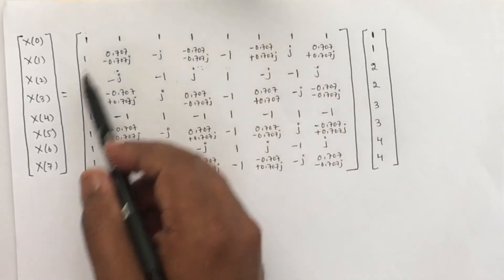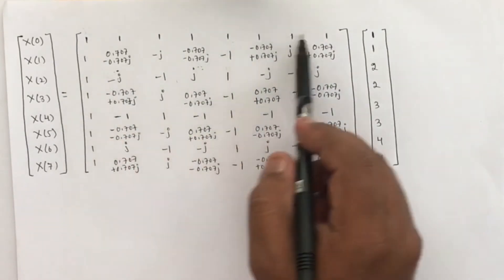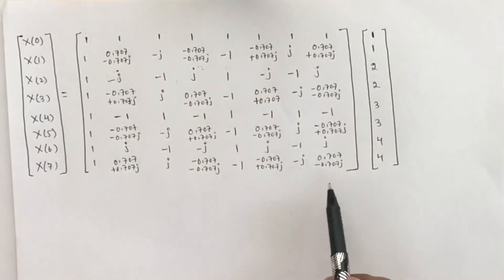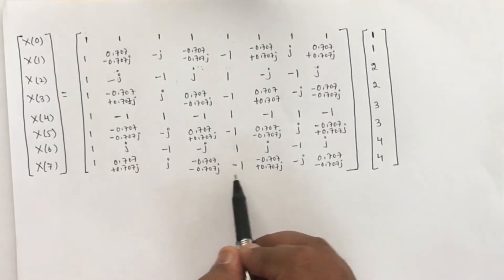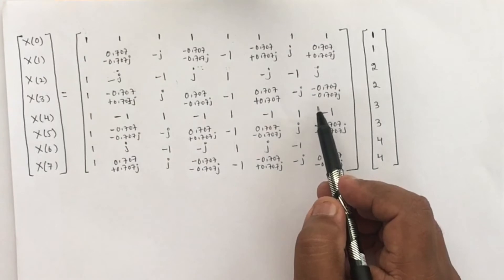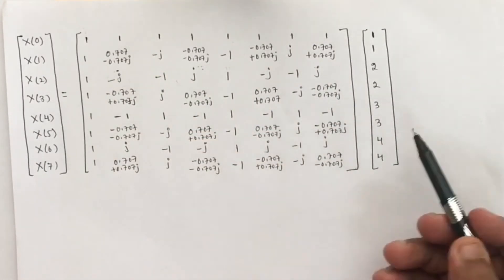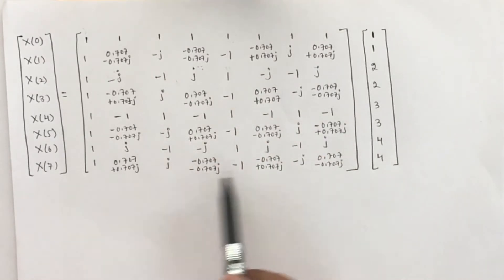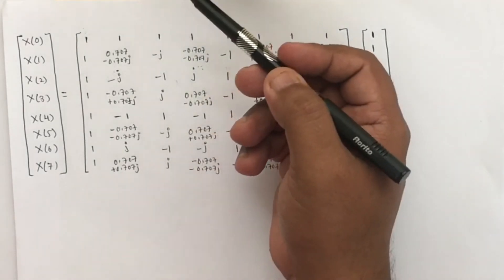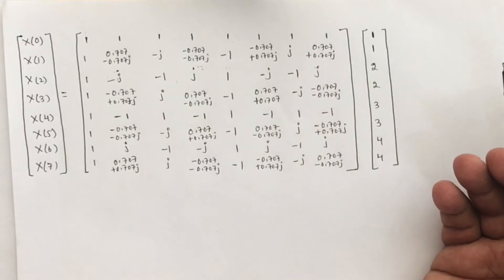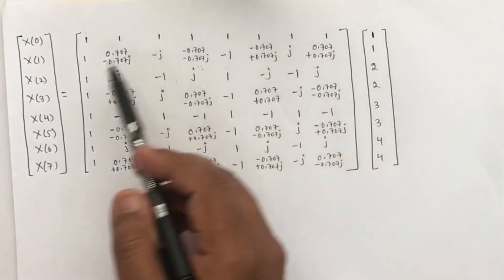Once we write the twiddle factor values, we get the complete matrix. This is the standard twiddle factor matrix for 8-point DFT. You can remember these twiddle factor values and substitute them directly. If you do not remember the matrix, you can use either of the two methods we discussed to calculate and fill in the values.